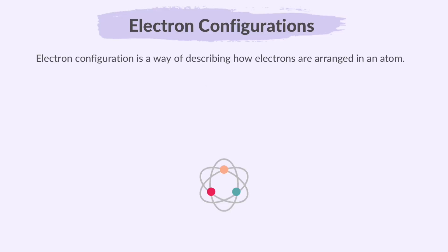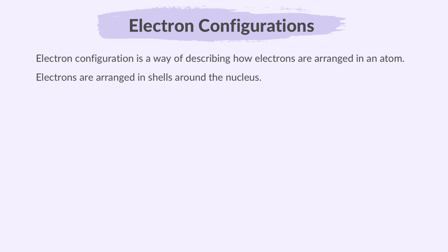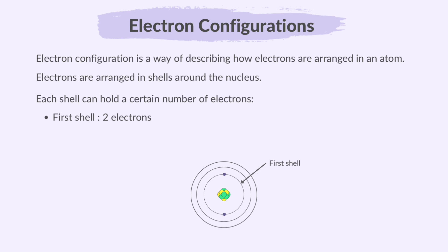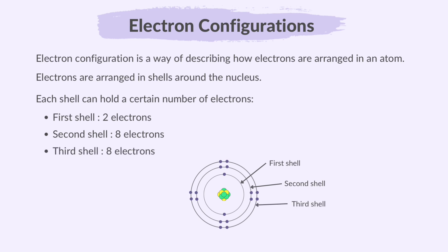Electron configuration is a way of describing how electrons are arranged in an atom. Electrons are arranged in shells around the nucleus. Shells are represented as rings around the nucleus. Each shell can hold a certain number of electrons. The first shell can hold 2 electrons, the second shell can hold 8 electrons, and the third shell can hold 8 electrons as well. Electrons fill up these shells or energy levels from the innermost to the outermost, with inner shells filling first before moving to the next shell.